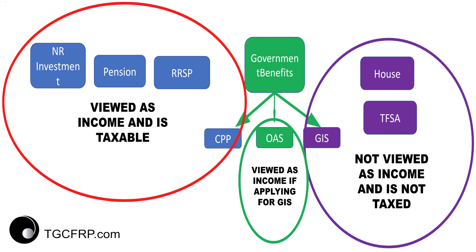So the first thing you need to understand about these boxes is how CRA views them — Canada Revenue Agency. Are they considered revenue, and thus are they taxable? So for a non-registered investment — if it's under your name, it's registered. But you could own some things that are not necessarily titled or have your name on them. Non-registered investments, pension, RRSP, and even CPP — these are all viewed as income and taxable.